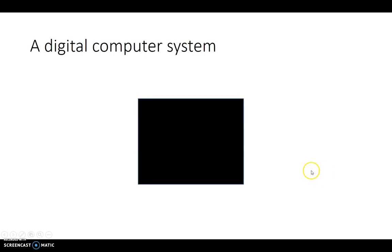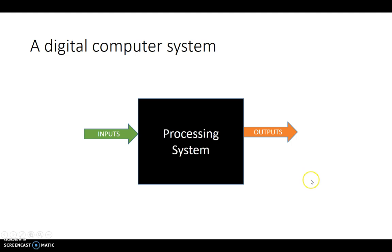In our last video, we looked at what exactly a computer system was, and we defined a digital computer system as something that had an input which produced an output based on some processing system in the middle. What we'll do in this video is take a look at very simple processing systems, or very simple digital computer systems.